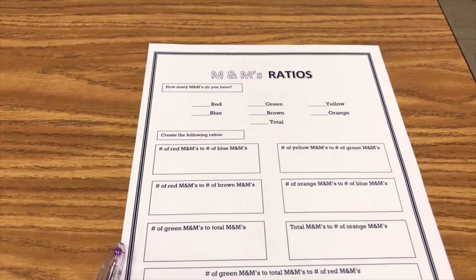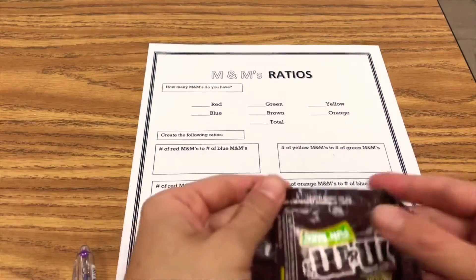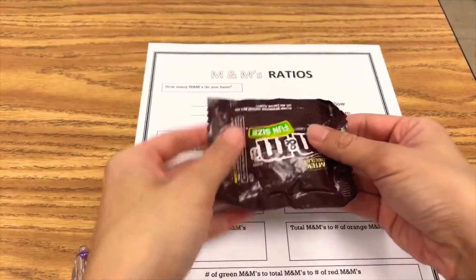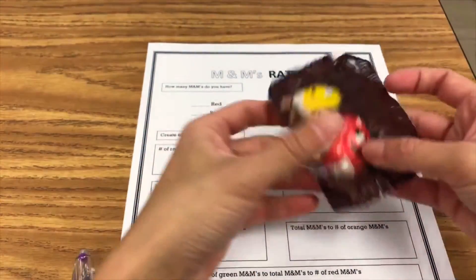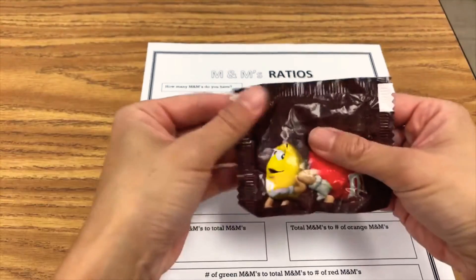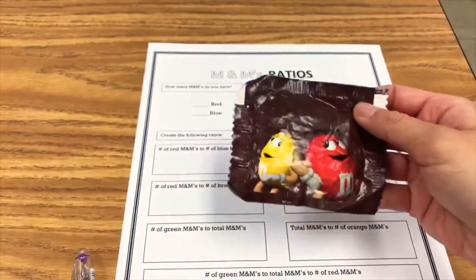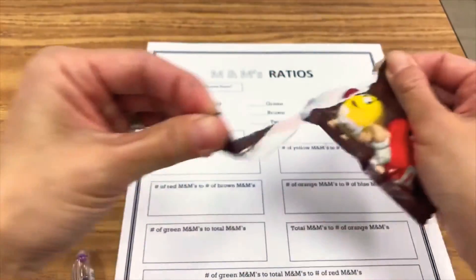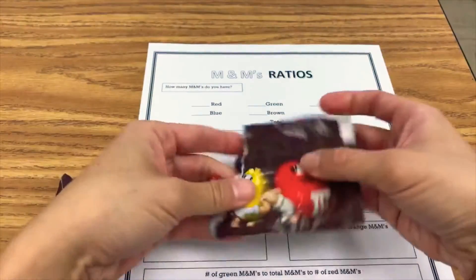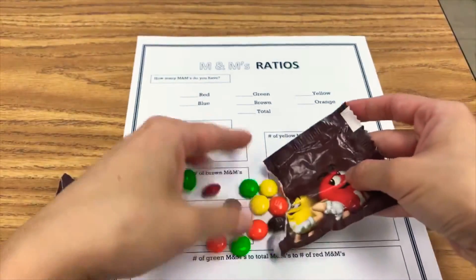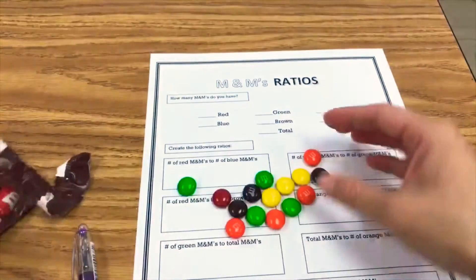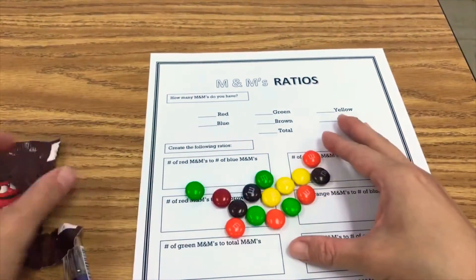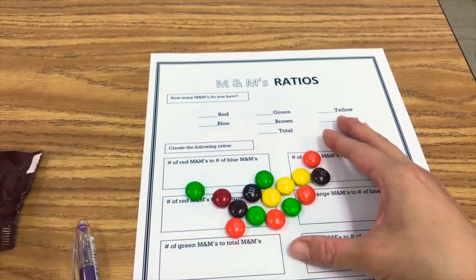Okay, so the activity looks like this — it is M&M ratios. You will need a bag of M&Ms. Being that it's Halloween time, these are just the fun size M&Ms. You can use one bag, two bags, or a full size bag, and you're just going to give each student a bag of M&Ms.